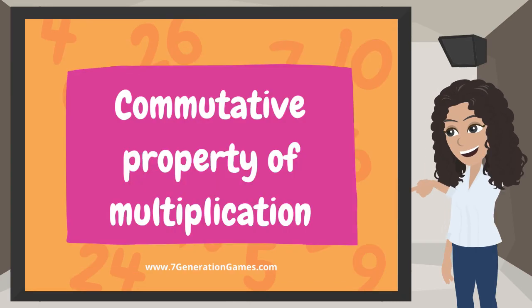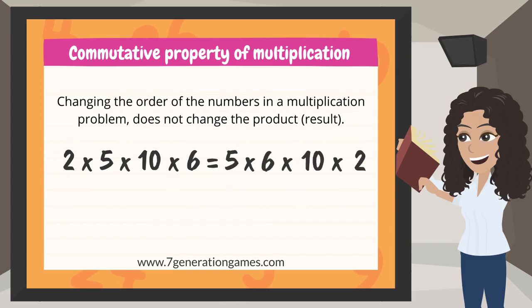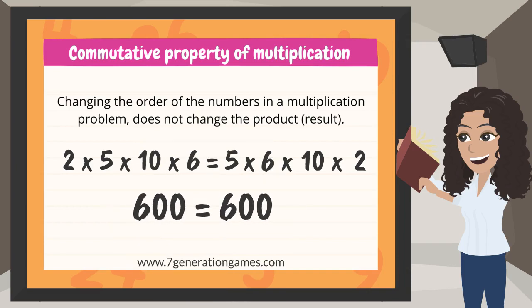Commutative Property of Multiplication: changing the order of the numbers in a multiplication problem does not change the product or result. 2 times 5 times 10 times 6 is the same as 5 times 6 times 10 times 2, which equals 600.